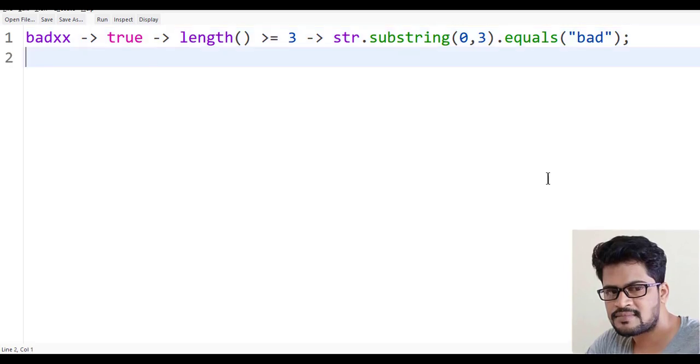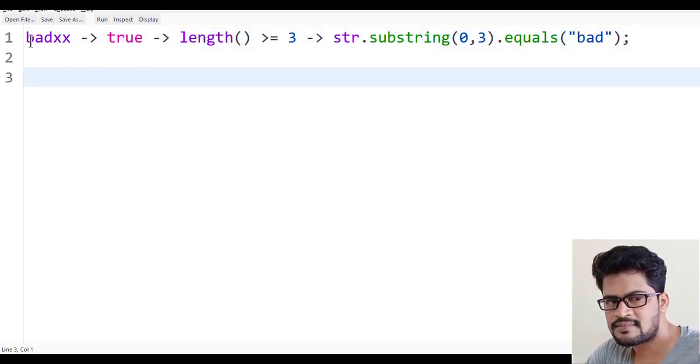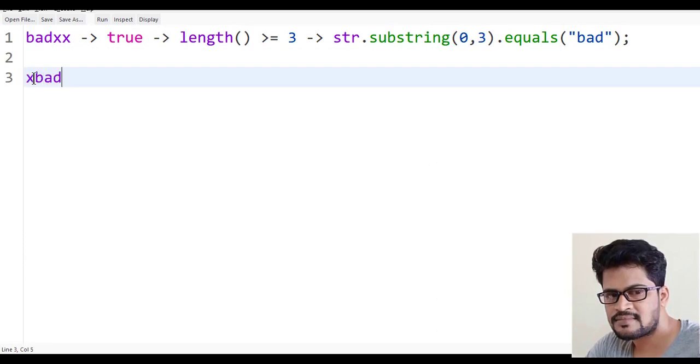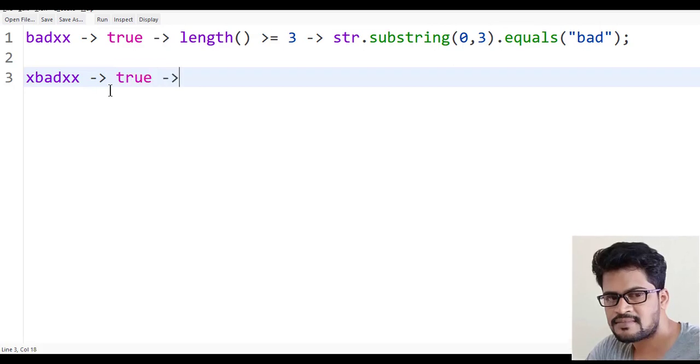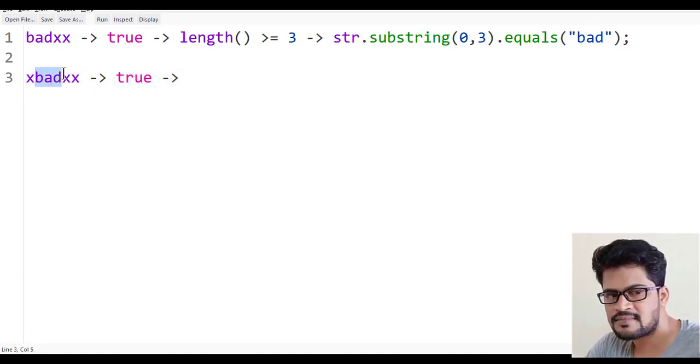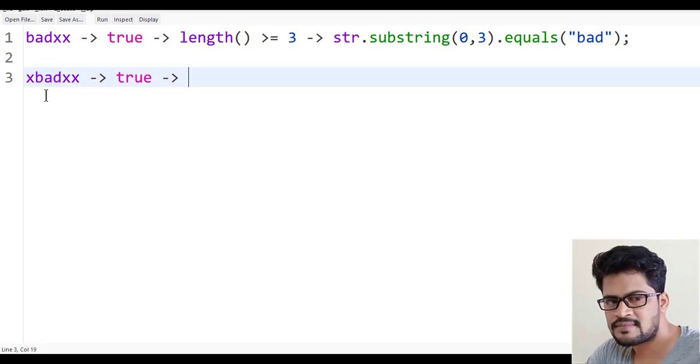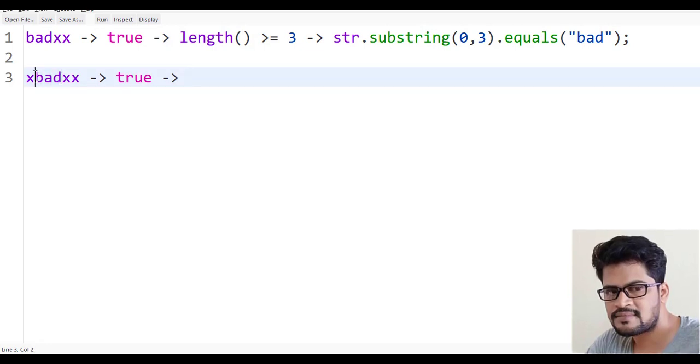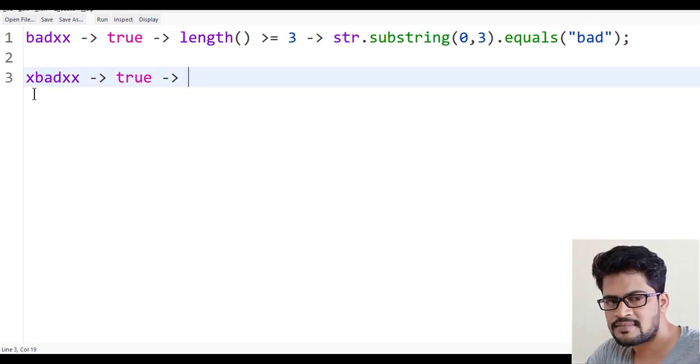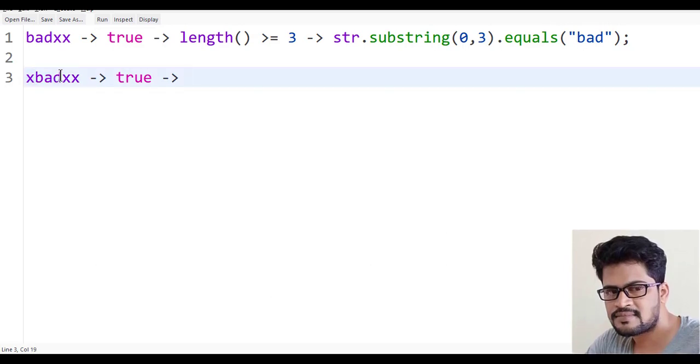They also said 'bad' can start at index 0 or 1. So sometimes it's xbadxx, which is again true. Now if you want to check the substring starting from index 1 to be 'bad', if it starts from the first index, that's three characters. Whatever the first one, that's four characters total.